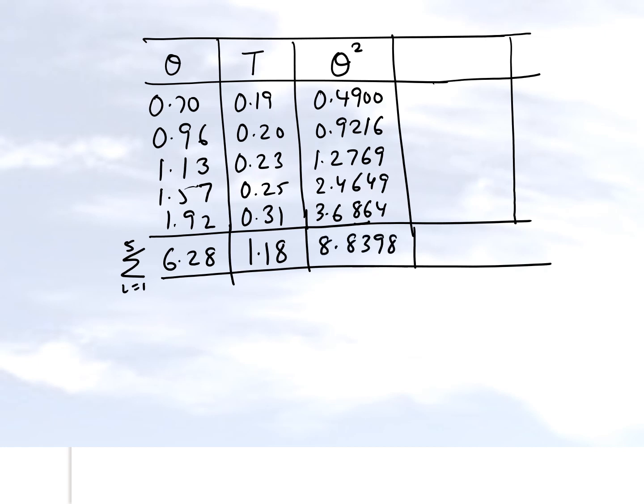Then the next summation which I need to find out is theta T. And so what that means is I multiply these two quantities for each of the five data points that are given to us, and those turn out to be as follows.